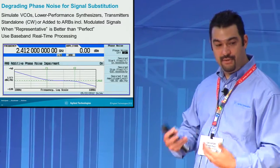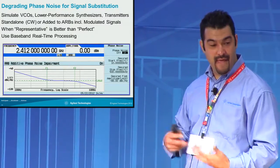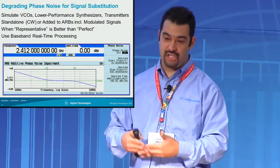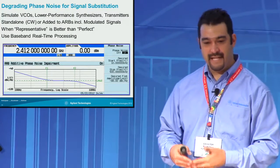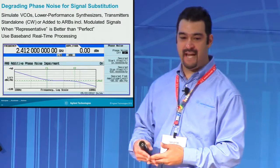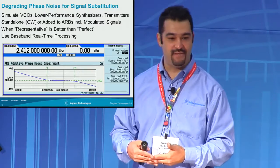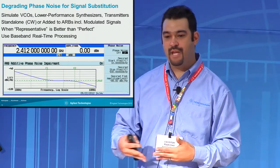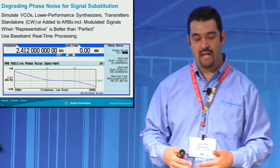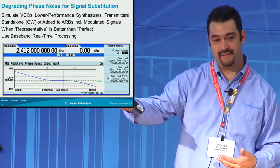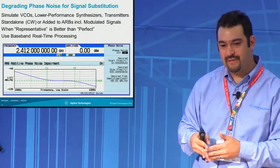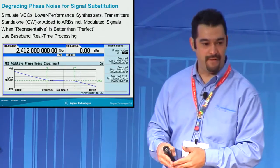By doing that, you can inject a specified and controlled amount of phase noise and characterize how your device behaves under those conditions. That way, you can optimize your design for not over-designing the reference section — figuring out how much phase noise you can get away with.